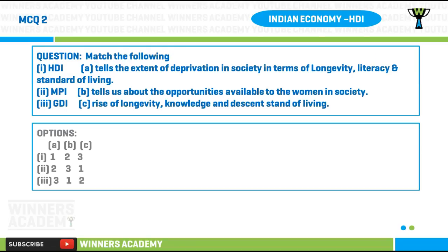Question number two: match the following. First, HDI tells the extent of deprivation in society in terms of longevity, literacy, and standard of living. Two, MPI (Multi-dimensional Poverty Index) tells us about the opportunities available to women in society. Three, GDI (Gender Development Index) — rise of longevity, knowledge, and decent standard of living. Match HDI, MPI, and GDI with the explanations given.